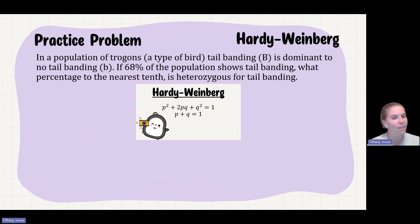So if you can pause the video, you could try this yourself. In a population of trogons, a type of bird, tail banding, capital B, is dominant to no tail banding, lowercase b. If 68% of the population shows tail banding, what is the percentage to the nearest tenth is heterozygous for tail banding?